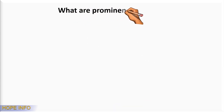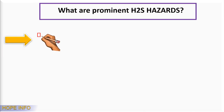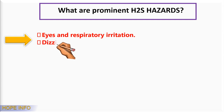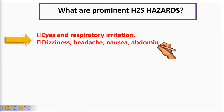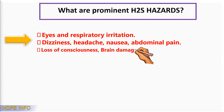What are the prominent H2S hazards? The effects include eye and respiratory irritation, dizziness, headache, nausea, abdominal pain, loss of consciousness, brain damage, and possible death or fatality.